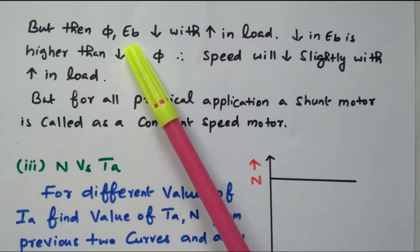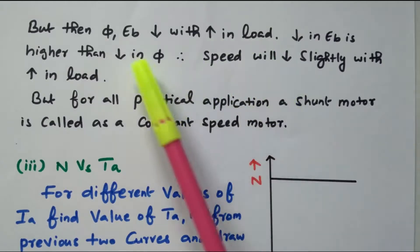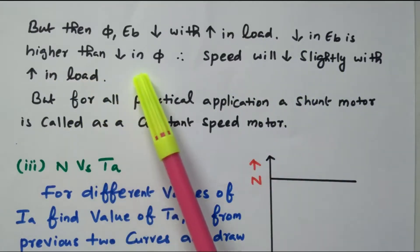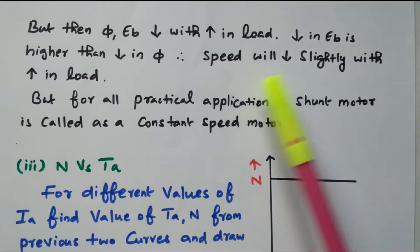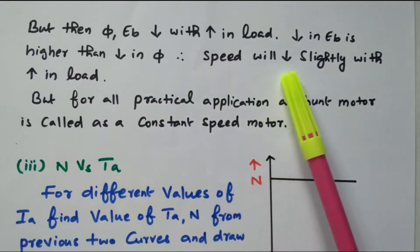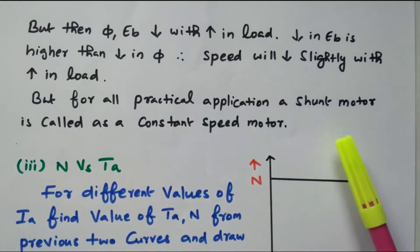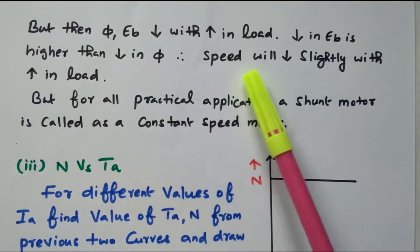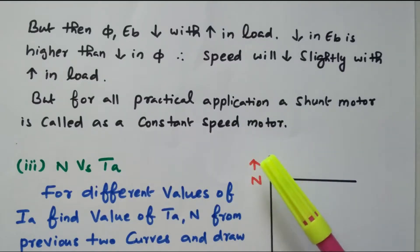When flux and back EMF decrease with increase in load, the decrease in back EMF is higher than the decrease in flux. So the speed will decrease slightly with increase in load. But for all practical applications, the shunt motor is called an almost constant speed motor. As load increases, φ and E_B will change but these effects compensate each other, so it is almost a constant speed motor. The shunt motor is also called a constant speed motor.